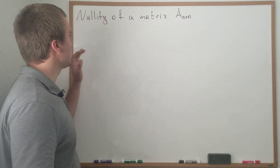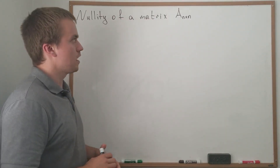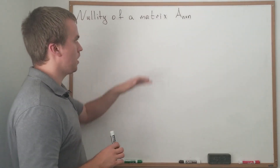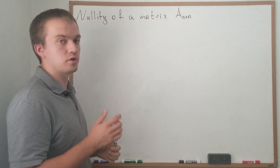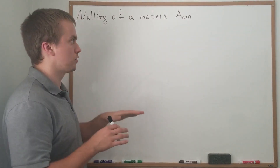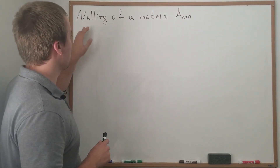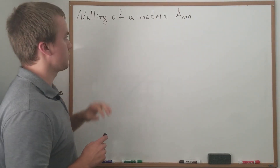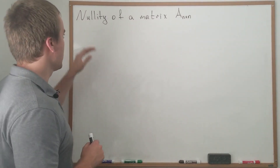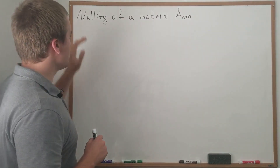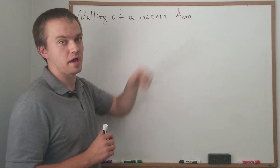Hello guys. In this video I want to discuss the nullity of a matrix A. In the previous video I discussed diagonalization of some matrix and mentioned moving towards general canonical form. But before that, I want to come back and discuss some topics related to eigenvalues and eigenvectors. So in this video I want to talk about the nullity of matrix A, n by n.